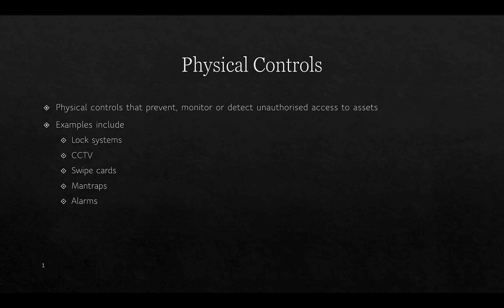Physical controls are those that prevent, monitor, or detect unauthorized access to assets. Examples include lock systems, CCTV, swipe cards, man traps, and alarms.